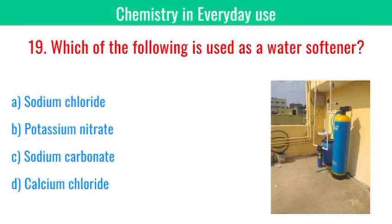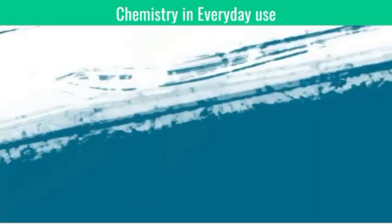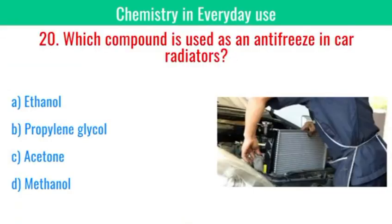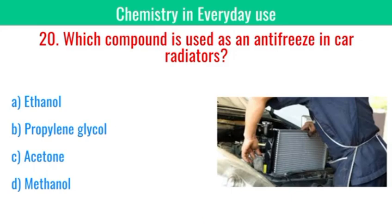Which of the following is used as a water softener? The answer is sodium carbonate. Which compound is used as antifreeze in car radiators? The correct answer is propylene glycol.